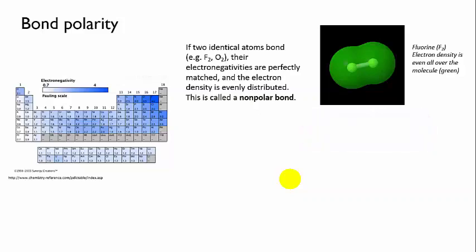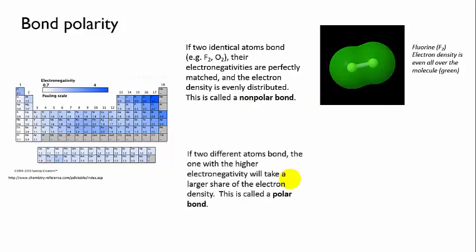However, if a covalent bond forms between two different atoms, then the atom with the higher electronegativity will exert a greater pull on the electron density and it will not be evenly shared.